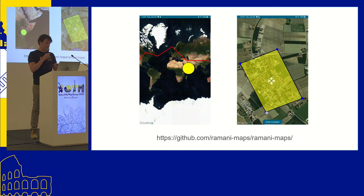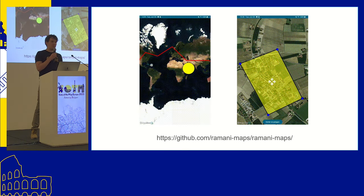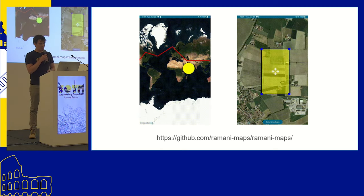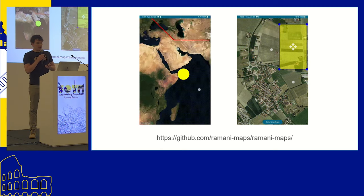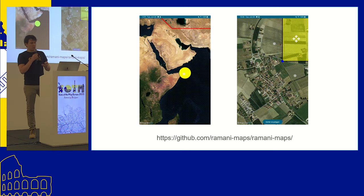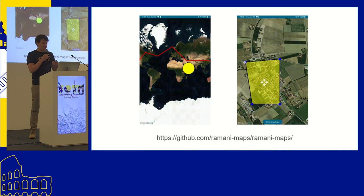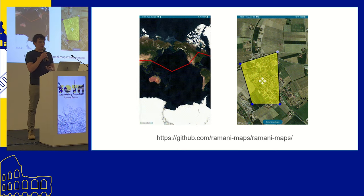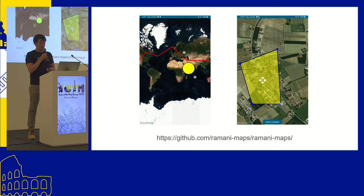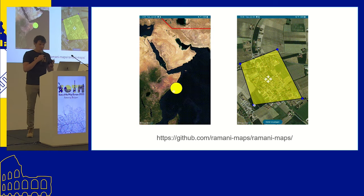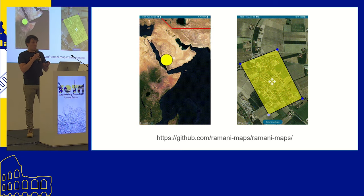All of this is not really new — maps have been doing that for a long time in all kinds of technologies. So it's not that Ramani is inventing anything. You can do that already with the MapLibre library. The question is: what is Ramani bringing on top of that?